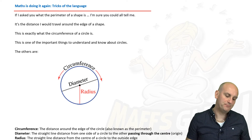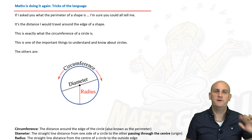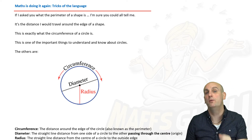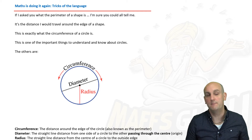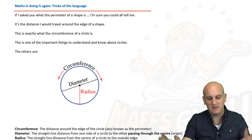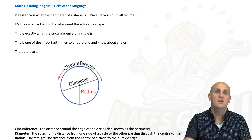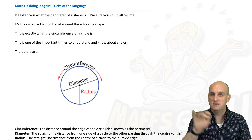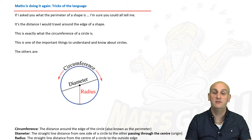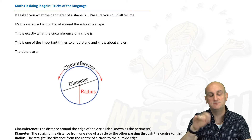If I asked you to find the perimeter of a shape, or asked you what the word perimeter meant, I'm pretty sure everyone in the maths world would say: it's the distance around the edge. We've been telling you that for years and years. So the distance around the edge — perimeter.